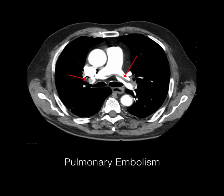This is a CT scan showing a pulmonary embolism. The classic PE that may show up on your exam will be what they call the saddle embolus — it sits over both sides of that bifurcation you're looking at. Be comfortable identifying PEs on a CT scan.